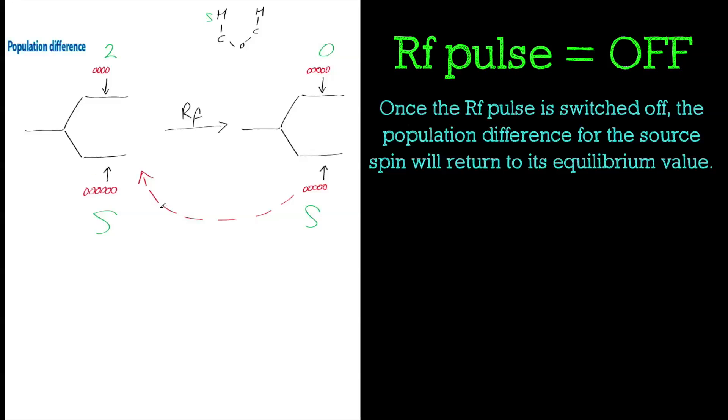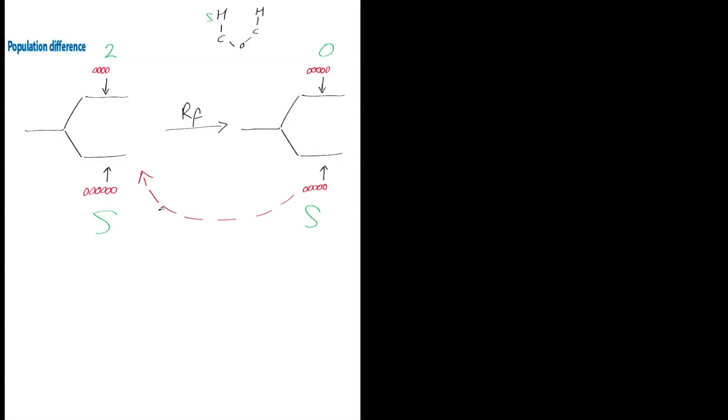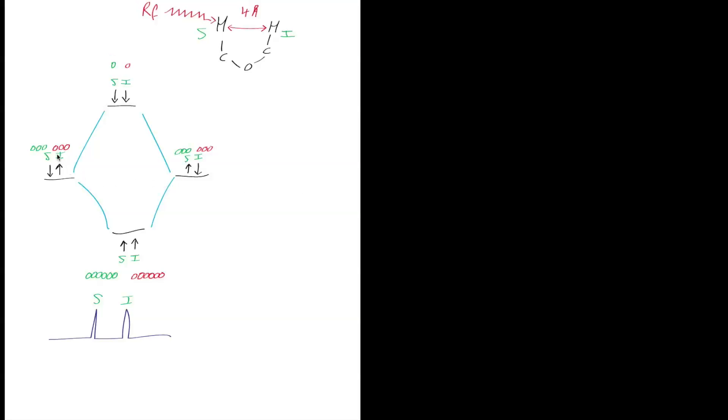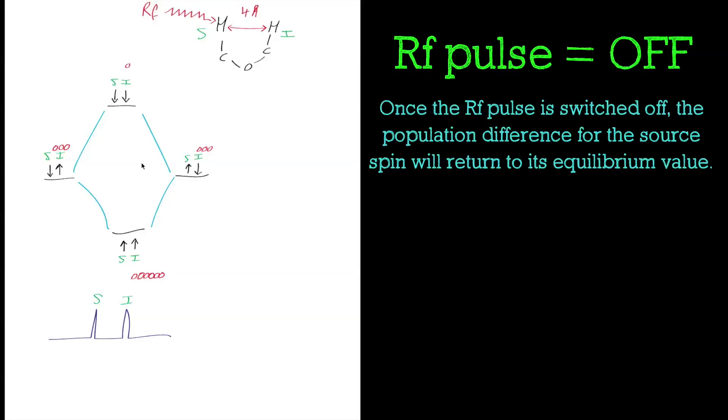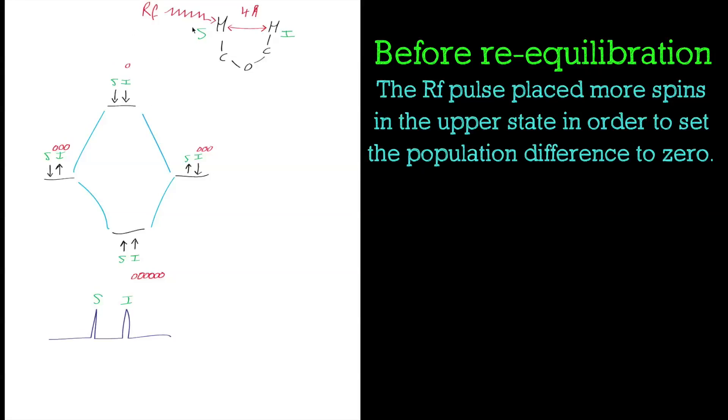What we need to do now is look at the effect that saturating the source spin has on the interesting spin. If we saturate the source spin, you can't distinguish which state it's in. But once the RF pulse has been applied, the source spin will try to go back to its equilibrium value. When the RF pulse is applied, it's got more in the upper state, so it will try to relax back down to its ground state.